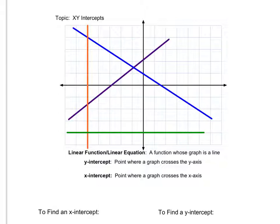Right now what we want to focus on is: what are x and y intercepts, and how do we find them? As you can see, I have a graph here. I have my x axis and my y axis, and within them I have four different equations. A y intercept is going to be any point where a graph crosses the y axis.